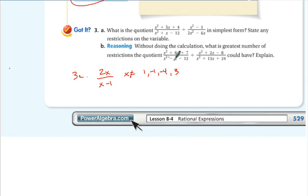And then got it B asked you, without doing the calculation, what's the greatest number of restrictions the quotient here could have and explain? And the answer to 3B, if you didn't try it, pause the video right now and try and at least come up with a guess. If you did try it, hopefully you got 6. And here's how. This has two factors. This has two factors. And this has two factors. This is a denominator now. This is a denominator now. And when we flip the fraction, this is going to be a denominator. So that's 2, 4, and then 6.